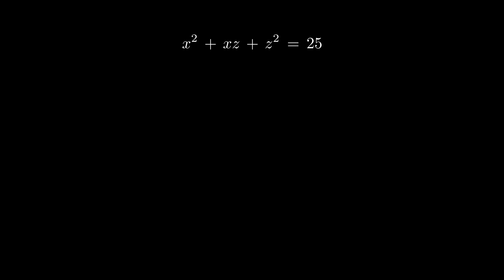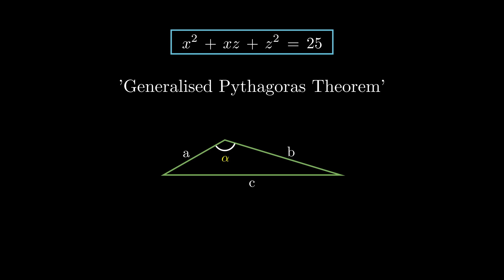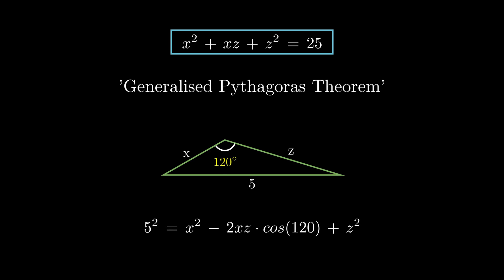Does this expression make you think of any triangular things? A recent high school student will recognize the cosine theorem, which I like to refer to as the generalized Pythagoras theorem. The triangle it describes has sides x, z, and 5, and we can find the angle by taking inverse cosine of minus a half, which is 120 degrees.